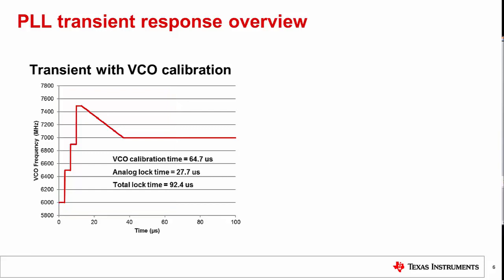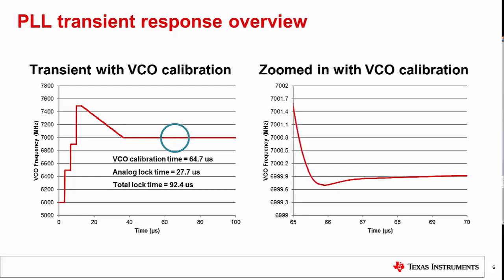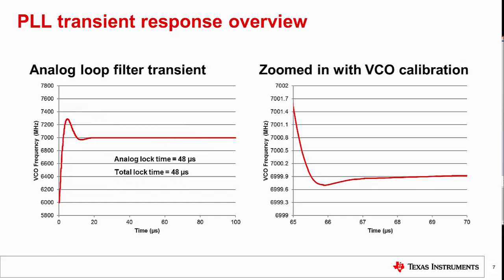Let's zoom in to the region where the analog lock time starts after the VCO calibration is complete. The transient response in this region behaves in a similar way compared to the analog loop filter transient. As the frequency is decreasing here, the shape of the response is inverted. For the rest of this video, we will focus on the analog lock time portion of the transient response and refer to it as lock time for simplicity.